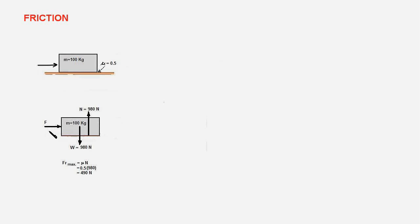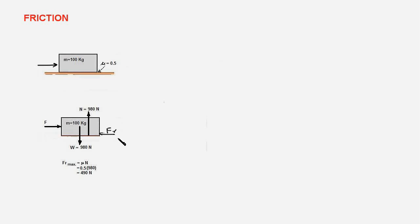When we apply a small force of 50 Newtons, the body is at rest. It does not move and therefore, to maintain equilibrium, there has to be a force of equal magnitude as F pointing in the opposite direction. We call this the frictional force FR. So when the applied force is 50 Newtons, the frictional force is also 50 Newtons. If we increase it to 100 Newtons, the body is still at rest and the frictional force would also increase to 100 Newtons to maintain equilibrium in the horizontal direction.